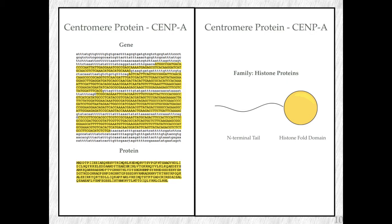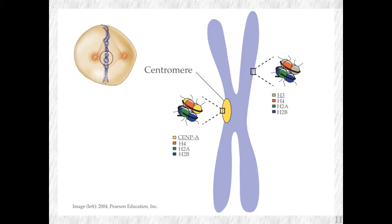Sempe is a histone protein, but it's actually a very special one. The most common histone proteins are H2A, H2B, H3, and H4, which form this nucleosome. Sempe is only incorporated where the centromere needs to be — it kicks out H3, the canonical H3, and replaces it. This actually forms or marks the centromere. So Sempe incorporation into the nucleosome makes the centromere, which makes Sempe really important: it needs to be incorporated at the right place where the centromere has to be formed.